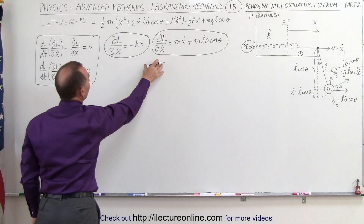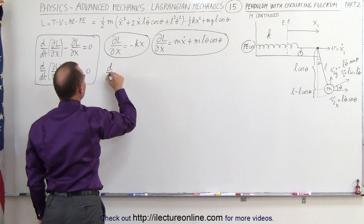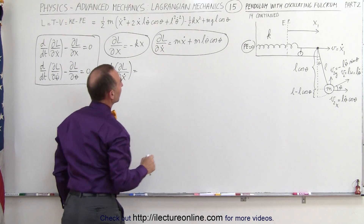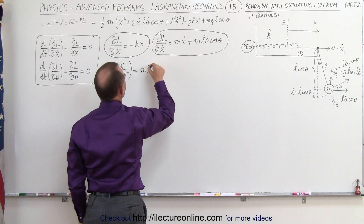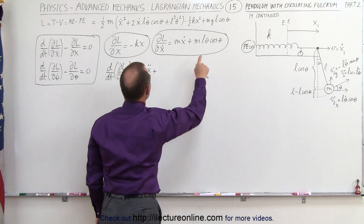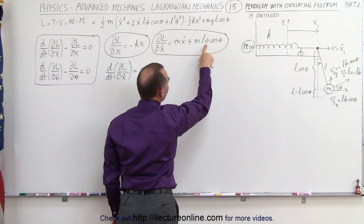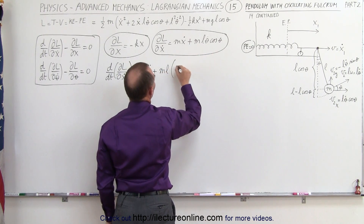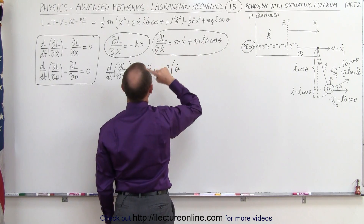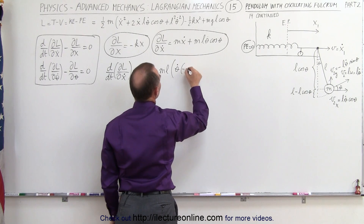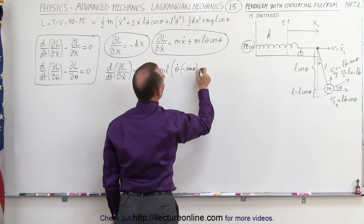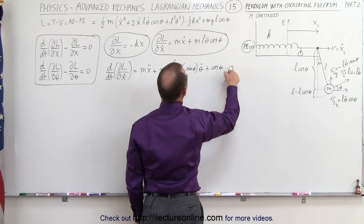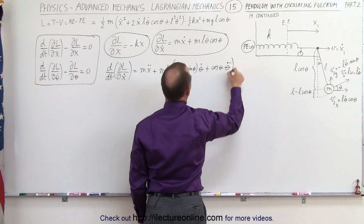Finally, we need to take the time derivative of that — d/dt of the partial of the Lagrangian with respect to x-dot. This is equal to: the first term is simply m times x-double-dot, plus we have to take the time derivative of the second term. Notice there are two variables: theta-dot and cosine of theta, so we need to use the product rule. m times l times the first, which is theta-dot, times the derivative of the second with respect to time, which equals negative sine of theta times theta-dot. Plus the second, which is cosine of theta, times the derivative of the first, which is theta-double-dot.